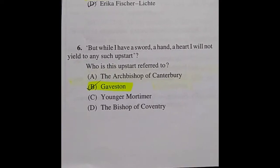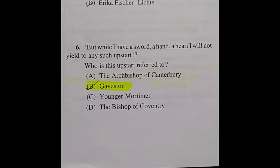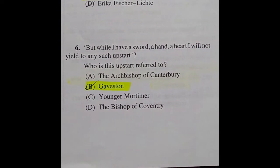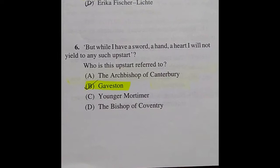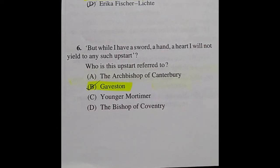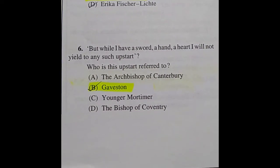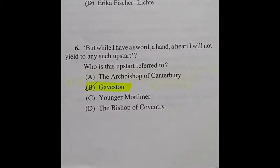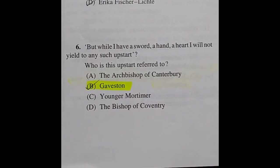Question 6: 'But while I have a sword, a hand, a heart, I will not yield to any such upstart' — who is this 'upstart' referred to? The answer is option B: Gaveston.